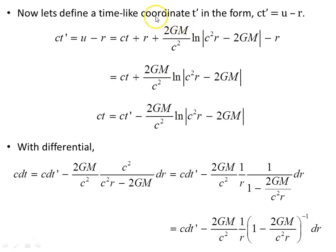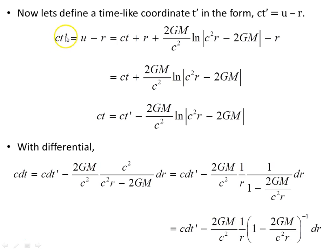We define a time-like coordinate t-prime such that c t-prime equals u minus r. This particular choice works as will be seen shortly. Noting that from u we subtract something with dimensions of distance, and c times time also has dimensions of distance. Substituting u, we find c t-prime equals ct plus this object here, where the r terms cancel out. Rearranging, we get ct equals c t-prime minus this object, and checking dimensions confirms correctness.